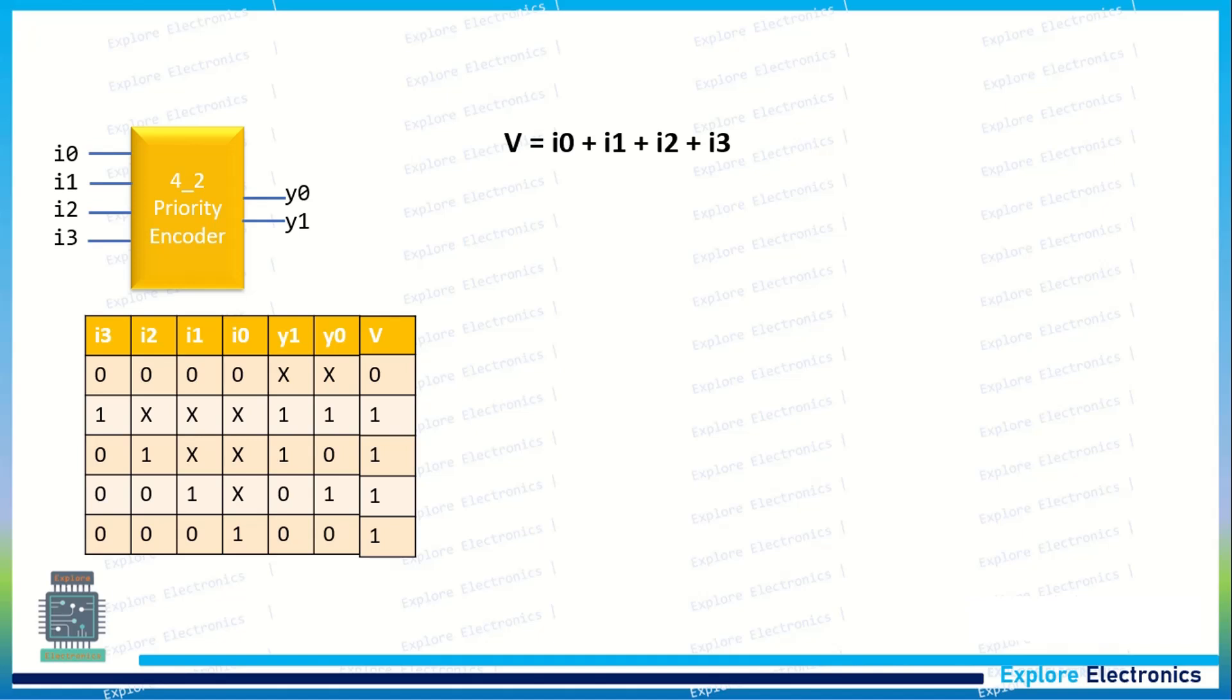Similarly, if you get the expression for y1, what is y1 here? y1 is 1 in these two cases. At this time, we have i3 is equal to 1, and then i3 is equal to 0, i2 is equal to 1.